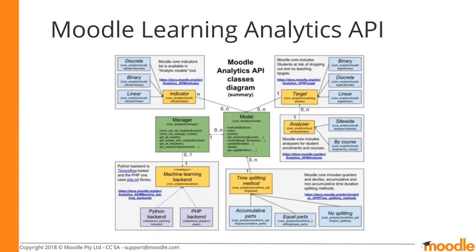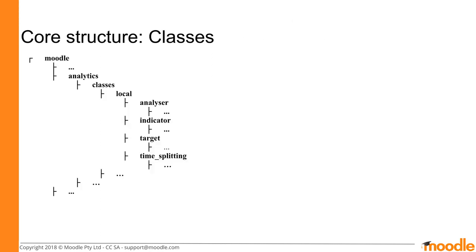This diagram shows a technical overview of the Moodle Learning Analytics API. Developers can extend this model or can create new models using the provided API. We will focus on different aspects of the API in each workshop of this series. Core classes to extend are found in the Moodle install directory in Analytics Classes Local, and will be discussed in greater detail in later presentations.